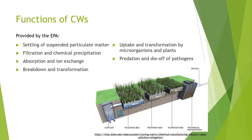Functions of constructed wetlands. Functions of wetlands that make constructed wetlands feasible for the treatment of wastewater, provided by the Environmental Protection Agency, include the settling of suspended particulate matter due to the slowing of water movement; filtration and chemical precipitation through contact of the water with the substrate and litter; adsorption and ion exchange on the surfaces of plants, substrate, sediment, and litter; breakdown and transformation of pollutants by microorganisms and plants; uptake and transformation of nutrients by microorganisms and plants; and predation and natural die-off of pathogens.